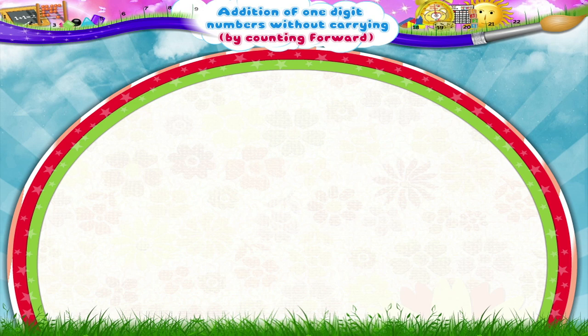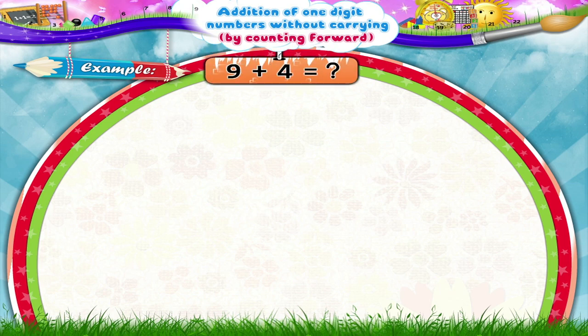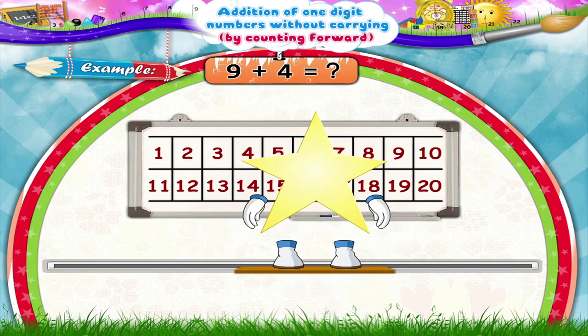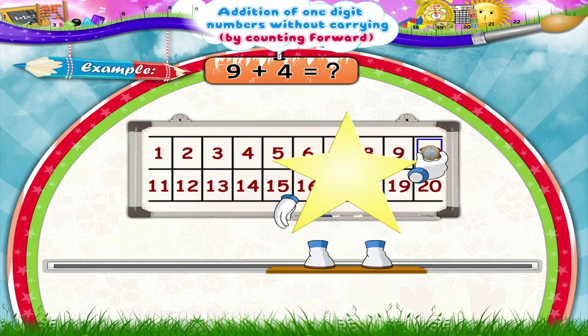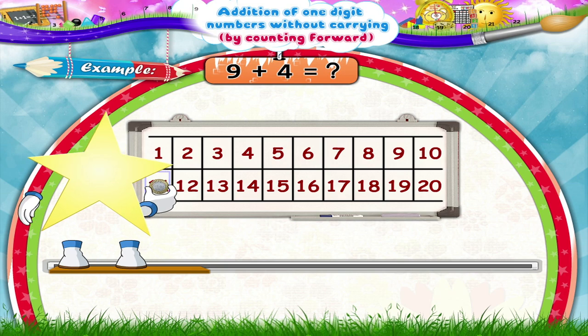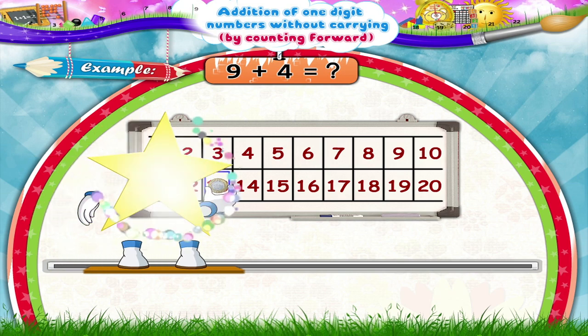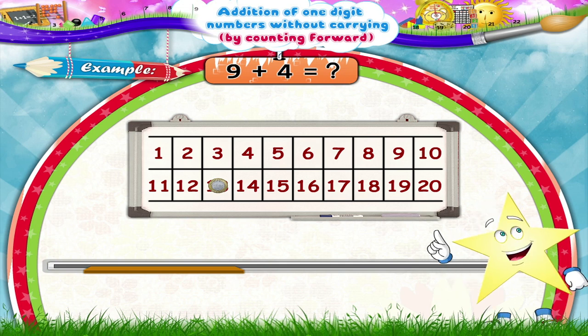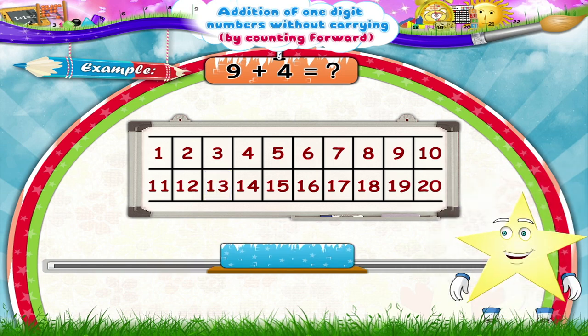Hmm. Let me think of the next example. Okay, let's add 9 plus 4. You do this one, Starry. Yes. Starting from 9, we move forward 4 squares. Which numbers do we reach, Starry? Yes. We reach the number 13. So Starry, 9 plus 4 equals 13.